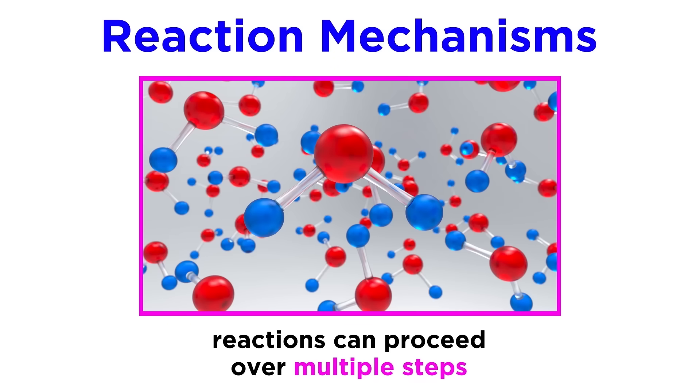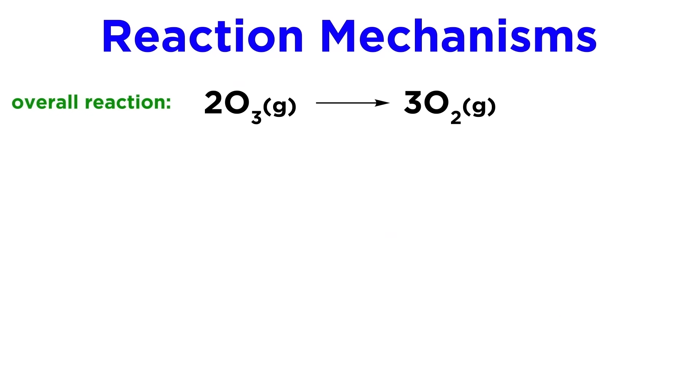Unbeknownst to the macroscopic observer that cannot see individual molecules, a reaction will often proceed over multiple steps. For example, the decomposition of ozone to become diatomic oxygen can be shown using this overall reaction, but in reality this reaction happens in two steps.